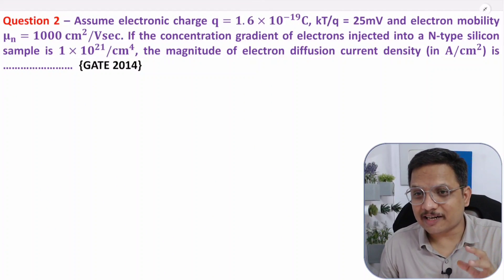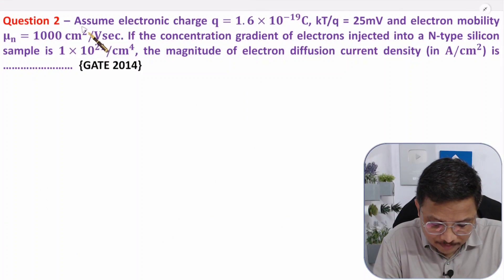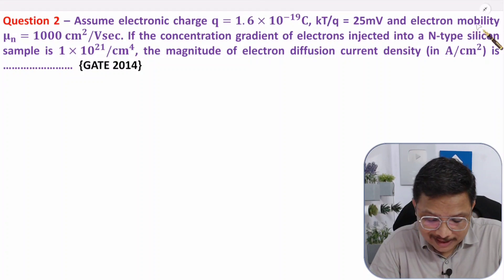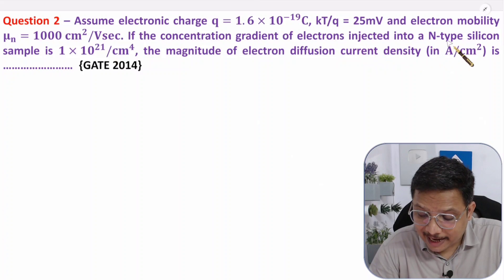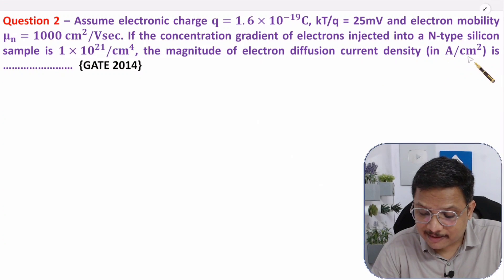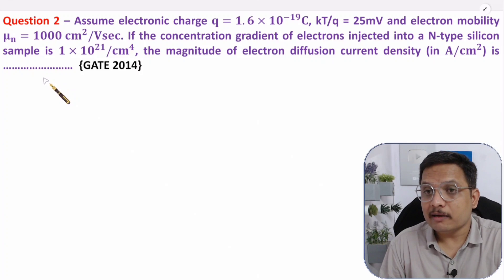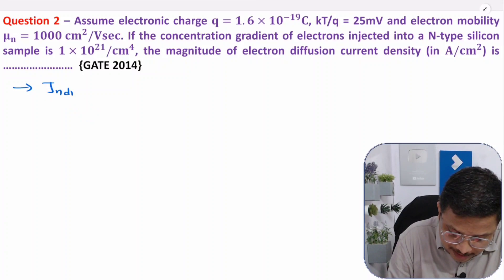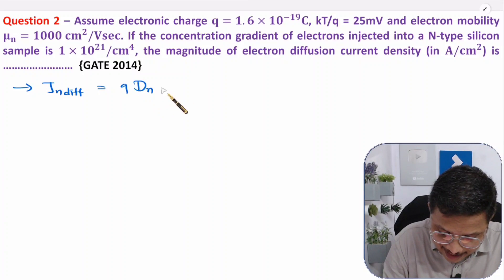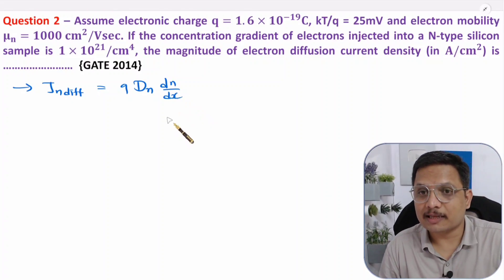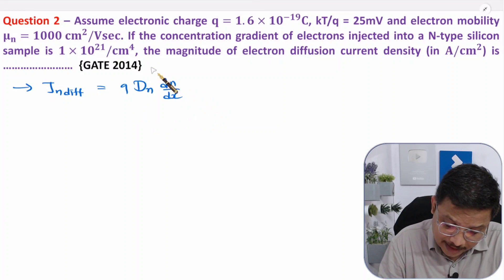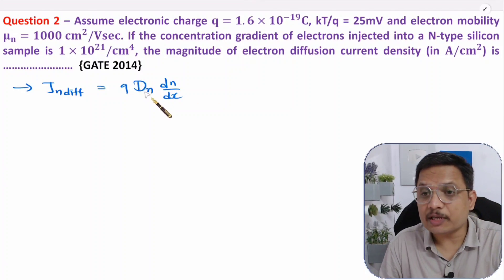Now let us move to the second interesting question. Assume electronic charge is given as the standard value, kT/q = 25 millivolts, and electron mobility μ_n is also given. If the concentration gradient injected in n-type silicon is given, then the magnitude of electron diffusion current density in ampere per centimeter square is how much? We need to find the diffusion current density: J_n(diffusion) = q × D_n × (dn/dx).